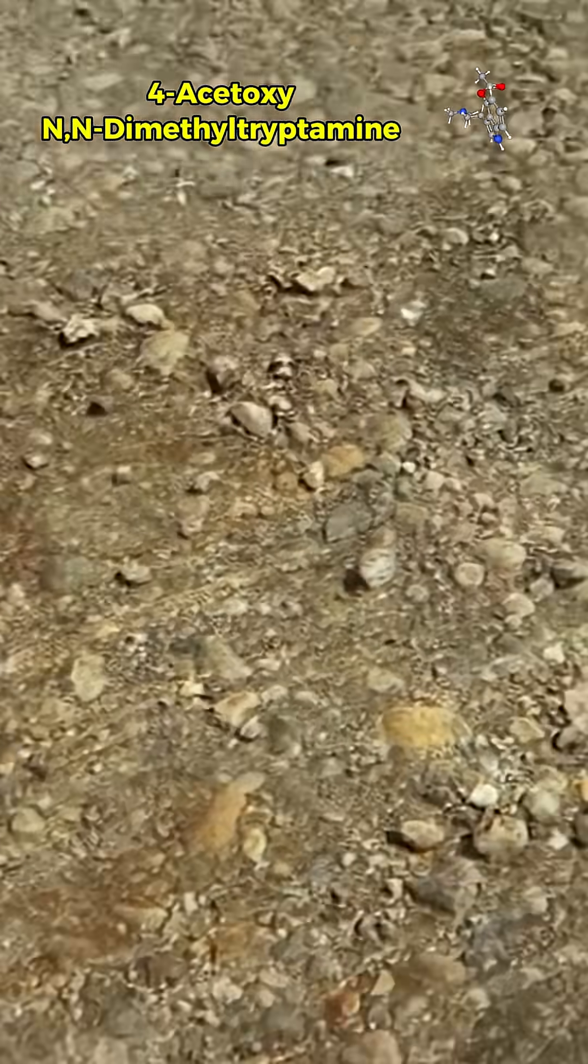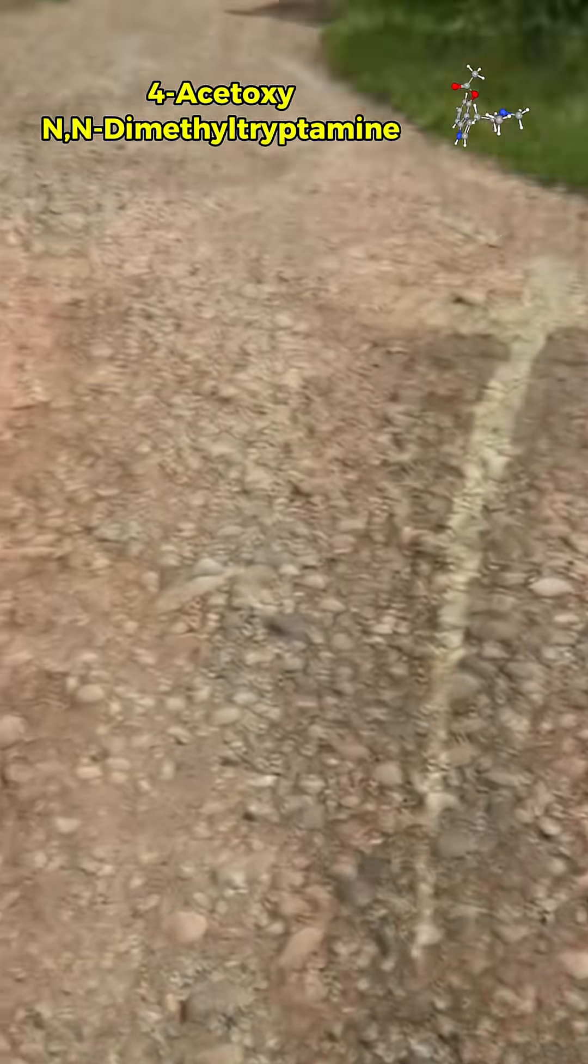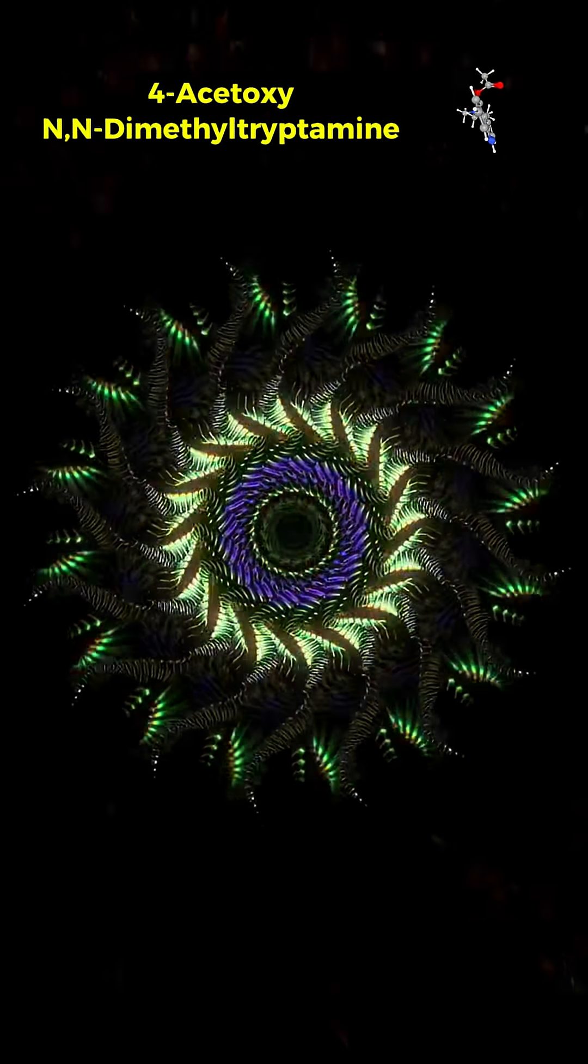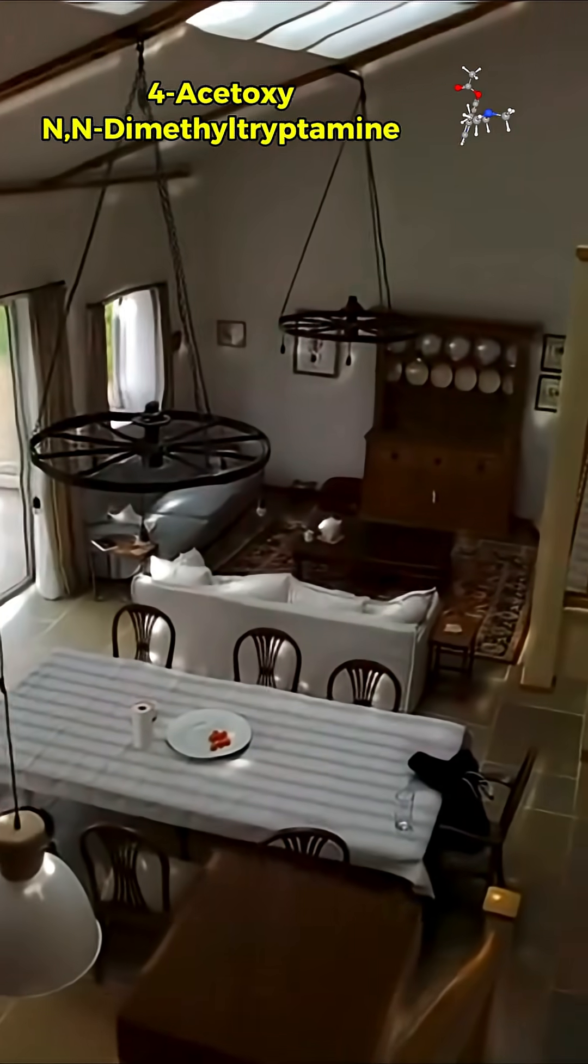Visuals can include glowing intensified colors, flowing textures, and kaleidoscopic patterns. Surfaces may ripple or breathe, while geometric fractals bloom behind closed eyes. Depth perception can warp, making spaces stretch or compress unnaturally.